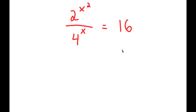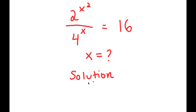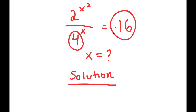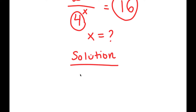In this equation, I have 2 to the power of x squared over 4 to the power of x is equal to 16, and I want to find the value of x. For my solution, I'm going to start by rewriting 4 as 2 squared and 16 as 2 to the power of 4, so that all my terms are in powers of 2.